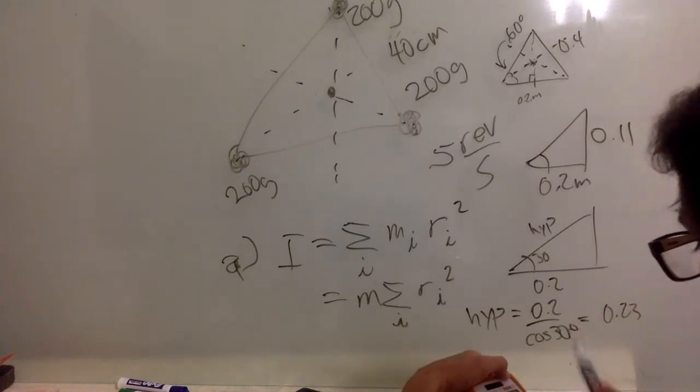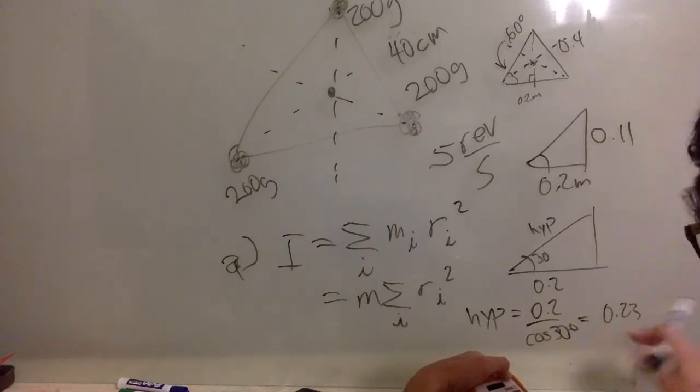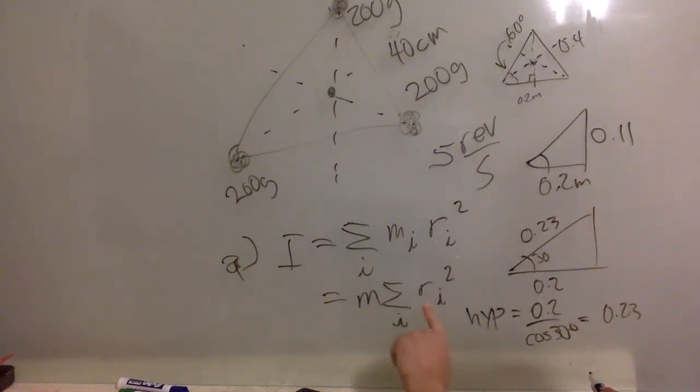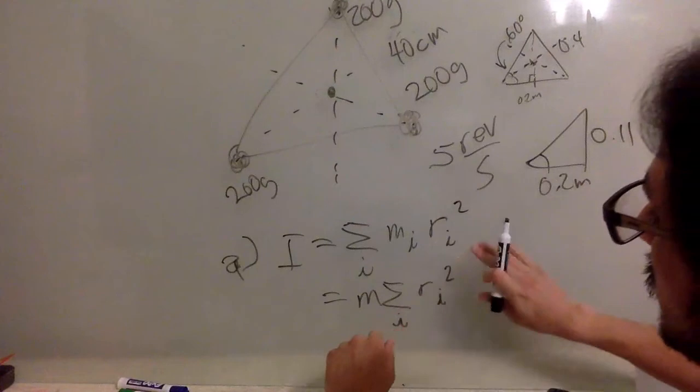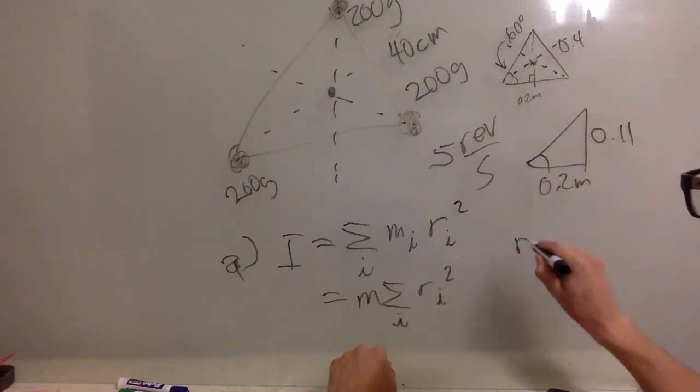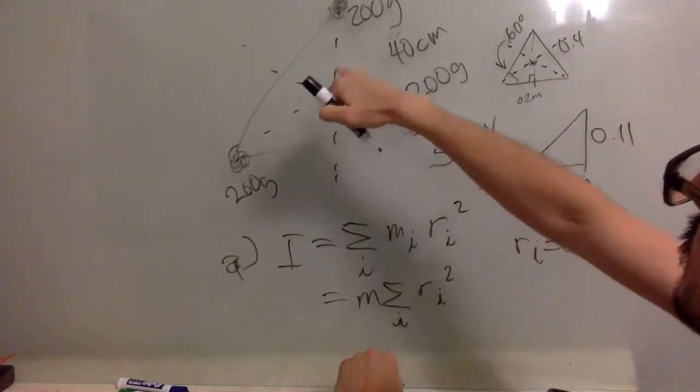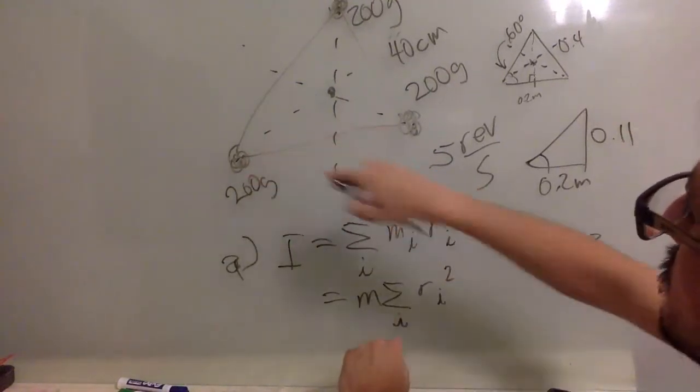So this is r, okay? So r_i is 0.23. It is the same distance for each of them, because in each case you have the same triangle: 30 degrees here, 90 degrees here, 0.2.